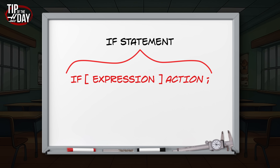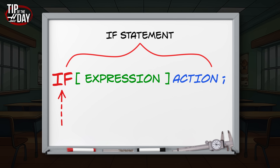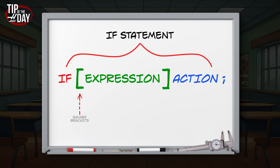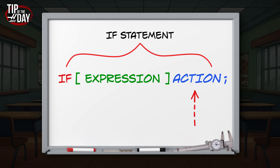This is our IF statement. They are glorious, allowing our programs to choose their own paths based on certain conditions. There are three parts to our IF statement. IF lets the control know that this line of code is special. Everything within these square brackets is our expression, usually containing some condition to be judged, and our ACTION is any G-code that we would like the control to execute if the expression evaluates as TRUE.